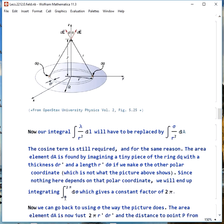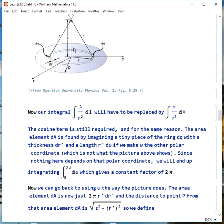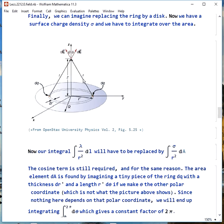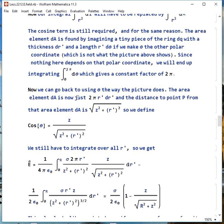Since integrating d theta from 0 to 2π gives us a factor of 2π, that'll be easy enough. Now we go back and use theta the way the picture does. What we get is the area element dA is 2π r prime dr prime, and the distance to point p from that area element is the square root of z squared plus r prime squared. There's our r prime, there's z, there's our distance. Cosine theta is, again, z over square root of z squared plus r prime squared.